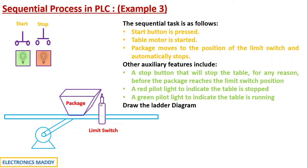So limit switch is basically a sensor that detects once the package has reached a specific position, it becomes equal to logically high state that corresponds to one in this case. So other auxiliary features that are supposed to be included is a stop push button that will stop the table for any reason before the package reaches the limit switch position.